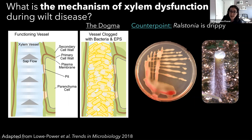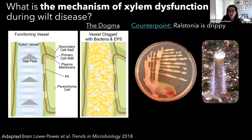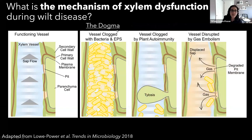Moreover, if we take a plant infected with Ralstonia and cut it at the base of the stem, in healthy plants you continue to get xylem sap oozing out of the stump because root pressure provides positive pressure to push xylem sap upward. We still see sap accumulate on the stump of infected plants - and in infected plants it's turbid with bacterial biomass. So we see that this is a very drippy bacteria that can move and be pushed out of the xylem. I was wondering whether the dogma was actually true.